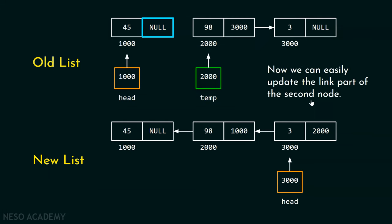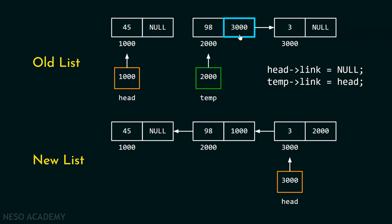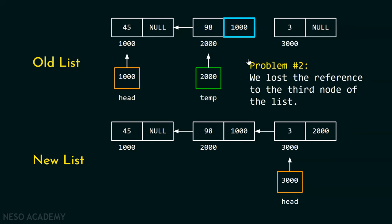The next step is to update the link part of the second node. We have a temp pointer pointing to the second node, so we update its link using head pointer: temp.link = head. This stores address 1000 in the link part of the second node. However, we've now lost the reference to the third node.